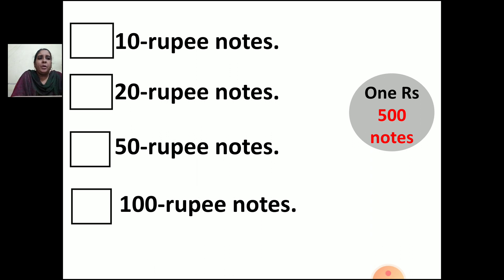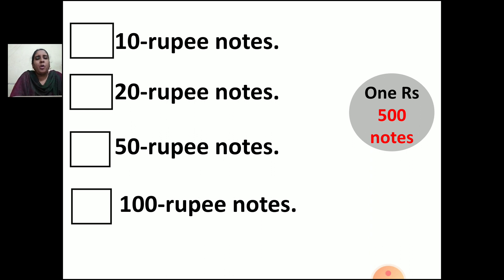Now, next is a 500 rupee note. To make 500 rupees, how many 10 rupee notes will you take? How many 20 rupee notes? How many 50 rupee notes? How many 100 rupee notes? In the table of 10, when you get 50 — 10 fives are 50 — so how many 10 rupee notes should you have to make 500 rupees? It should be 50. Your answer is 50.